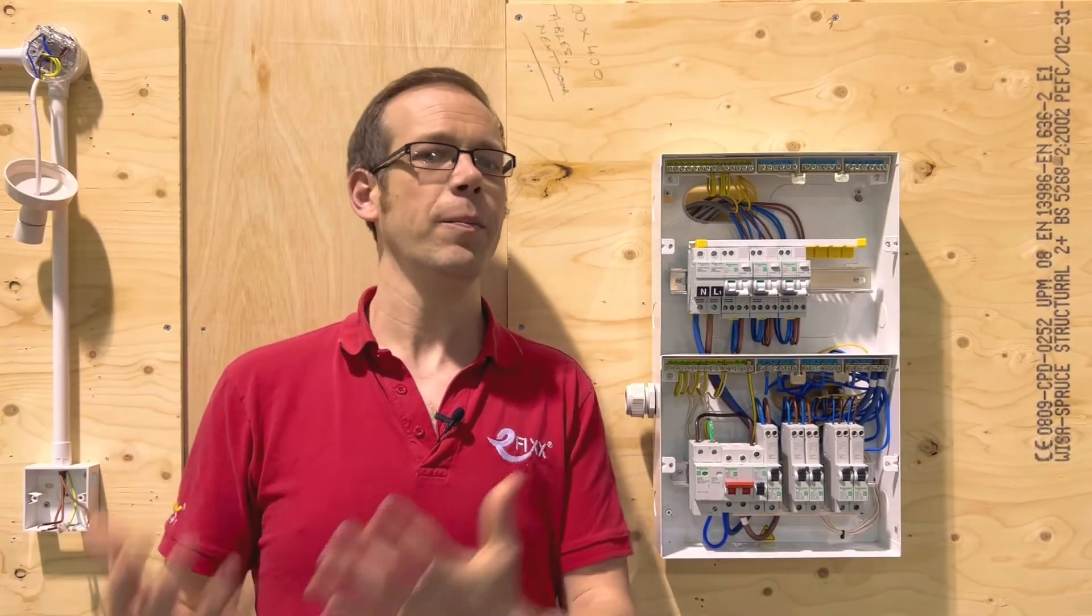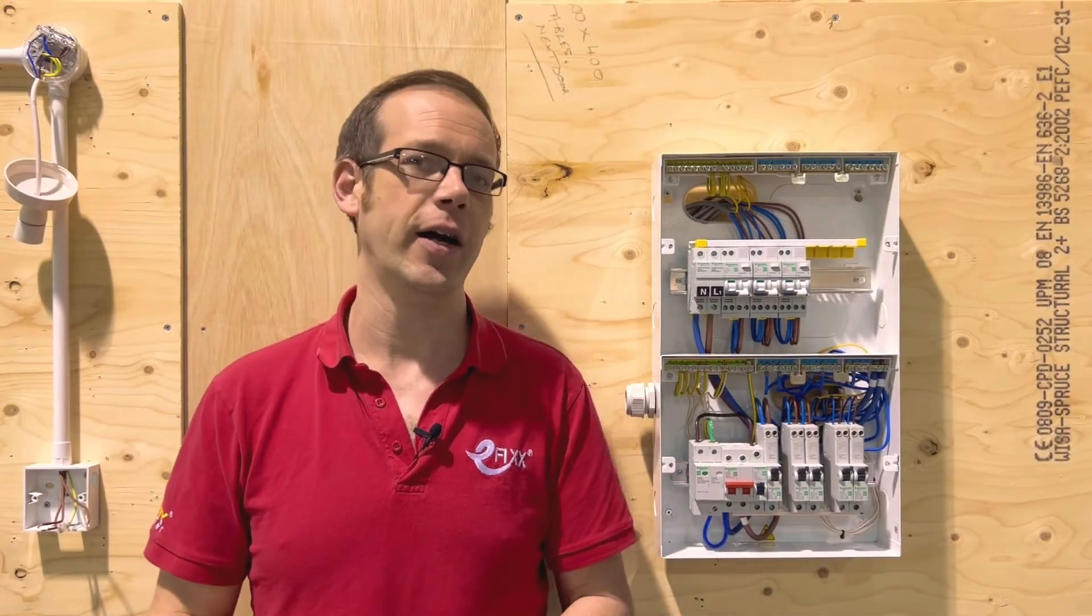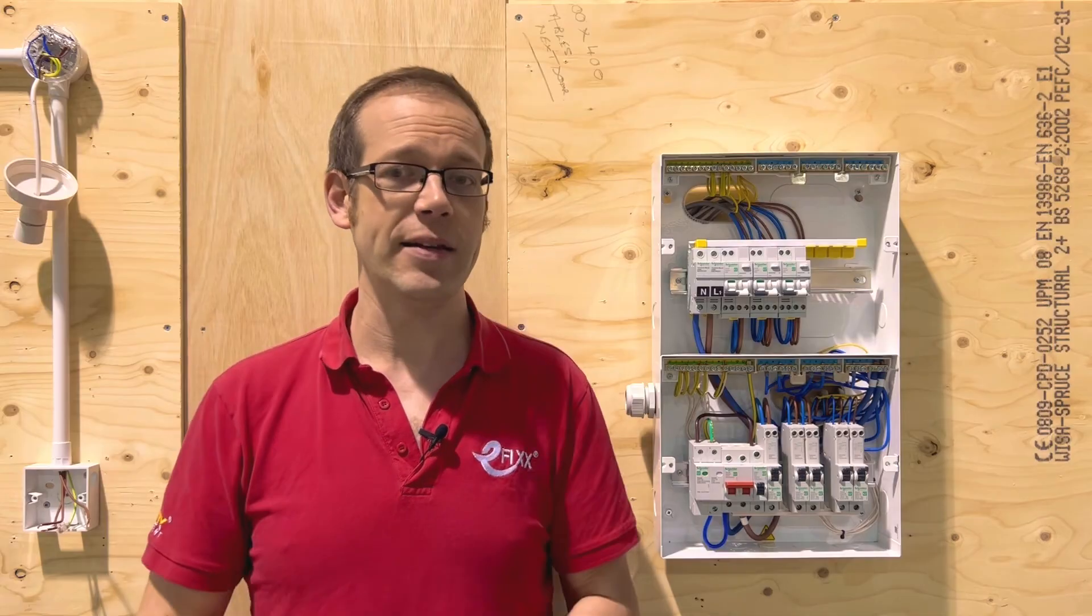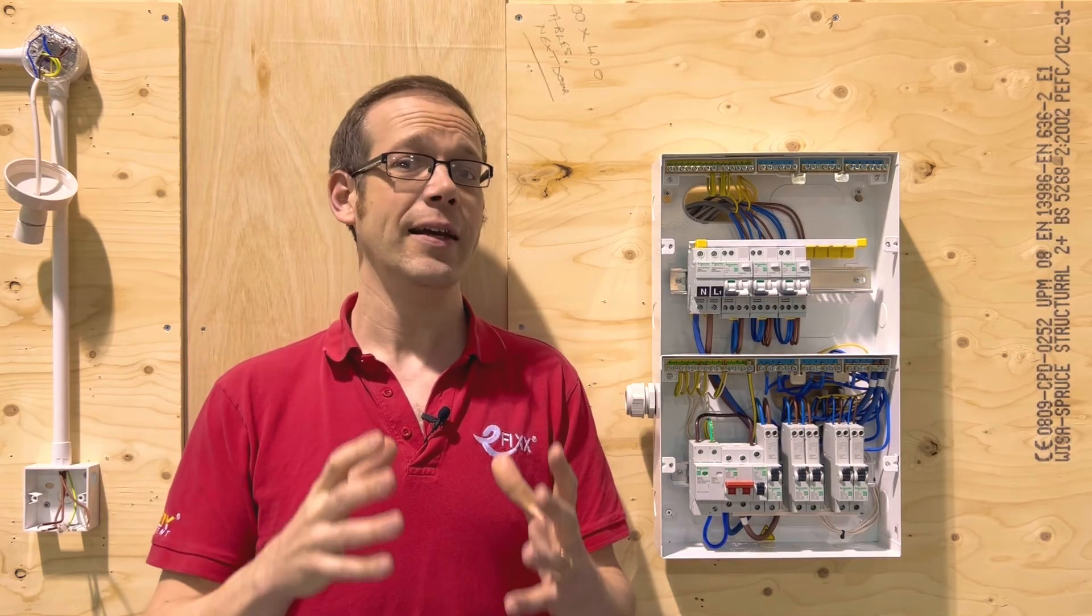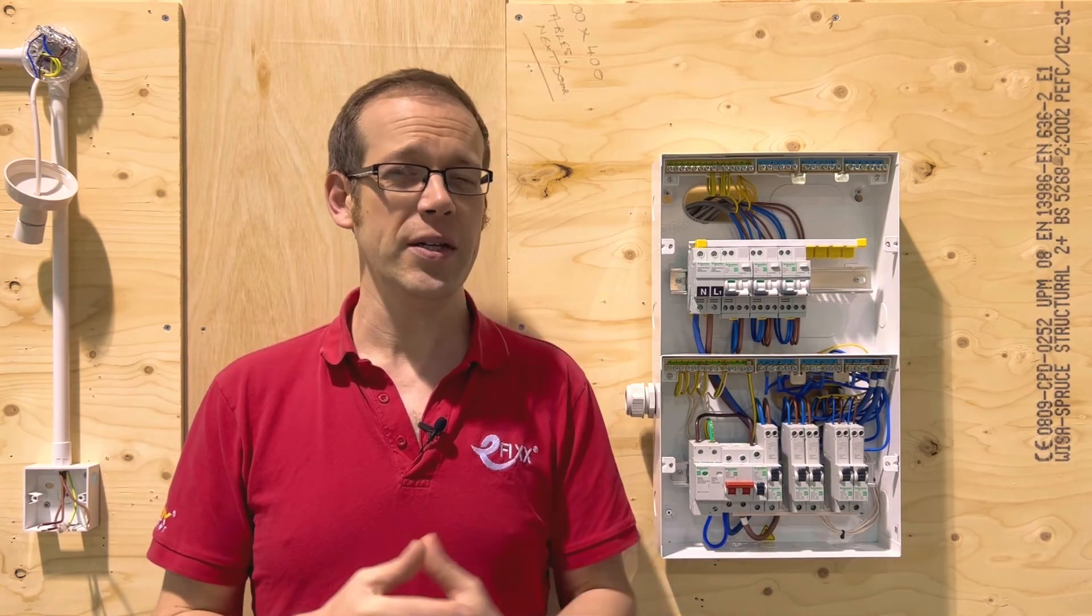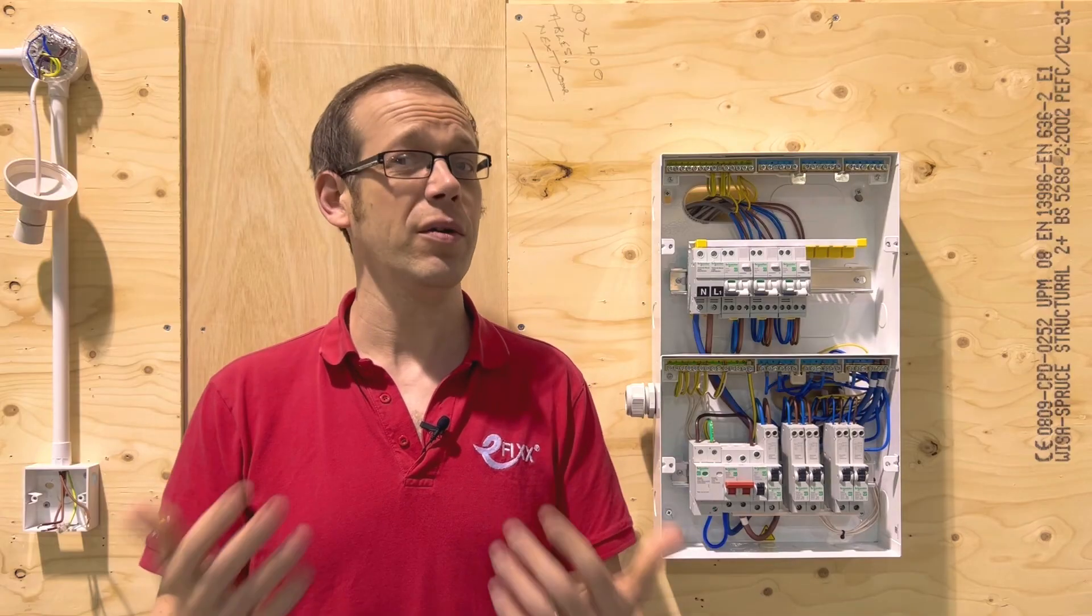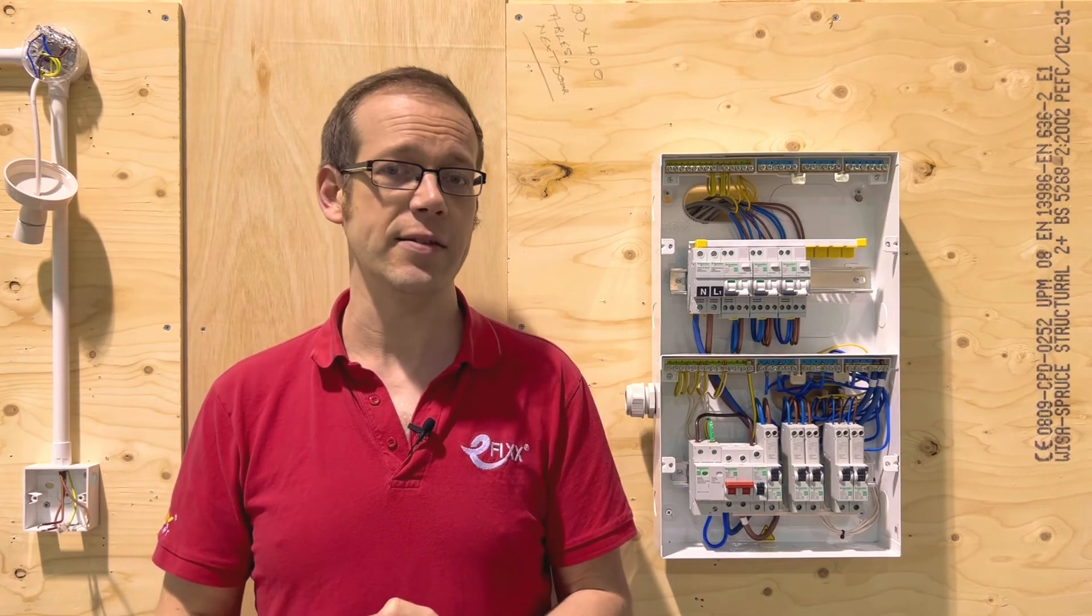So you have to do something to mitigate against the hazard of arc faults and the writers of BS 7671 say that this is the best option so you're putting yourself in a tricky situation if you don't use AFDDs on socket circuits.